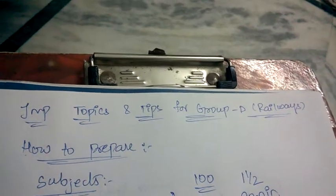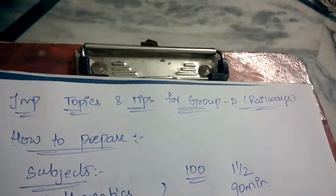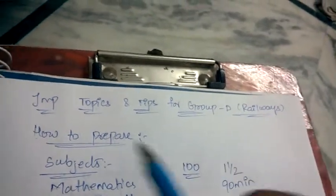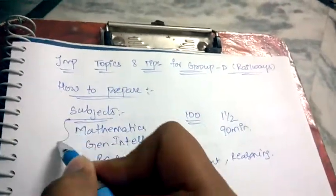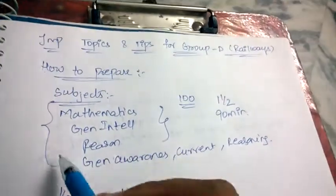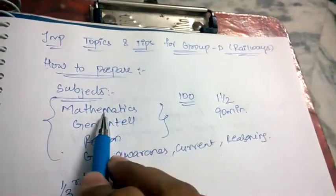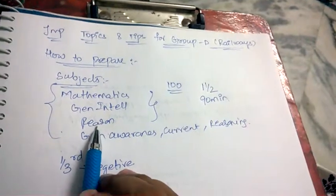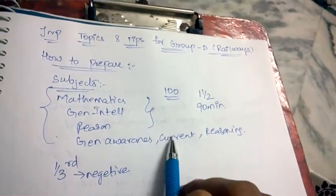Hello friends, welcome back to Best Way to Study. In this video, we are going to discuss important topics and tips for group discussion of railway examination. Coming to subjects, these subjects will be appearing in the question paper of railway examinations Group D — they'll be asking questions on Mathematics, General Intelligence and Reasoning, General Awareness, Current Affairs, and Logical Reasoning.